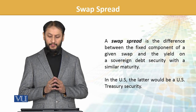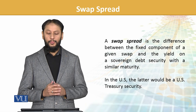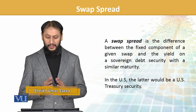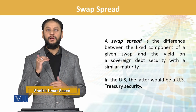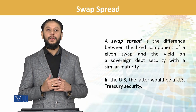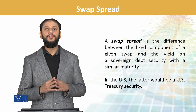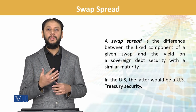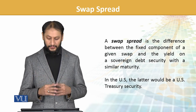Swap spread is the difference between the fixed component of a given swap and the yield on the sovereign debt with a similar maturity. In the US, the latter would be US Treasury. This means if the US Treasury rate is about 3% and the swap rate is about 5%, the difference of 2% is referred to as the swap spread.